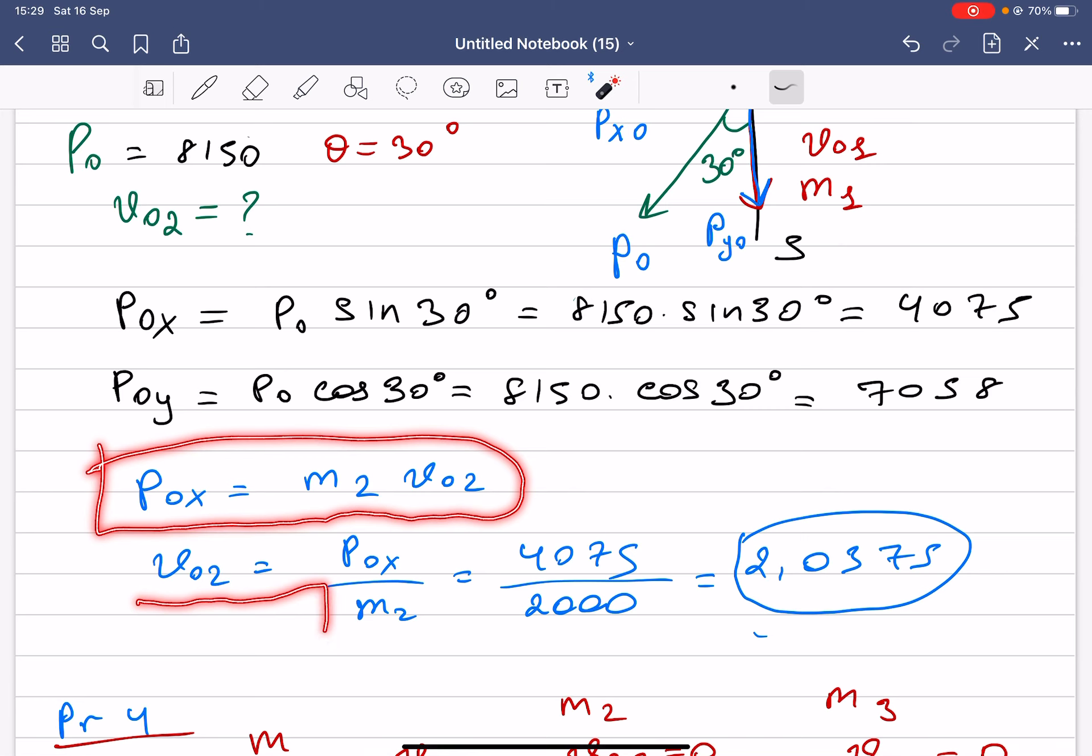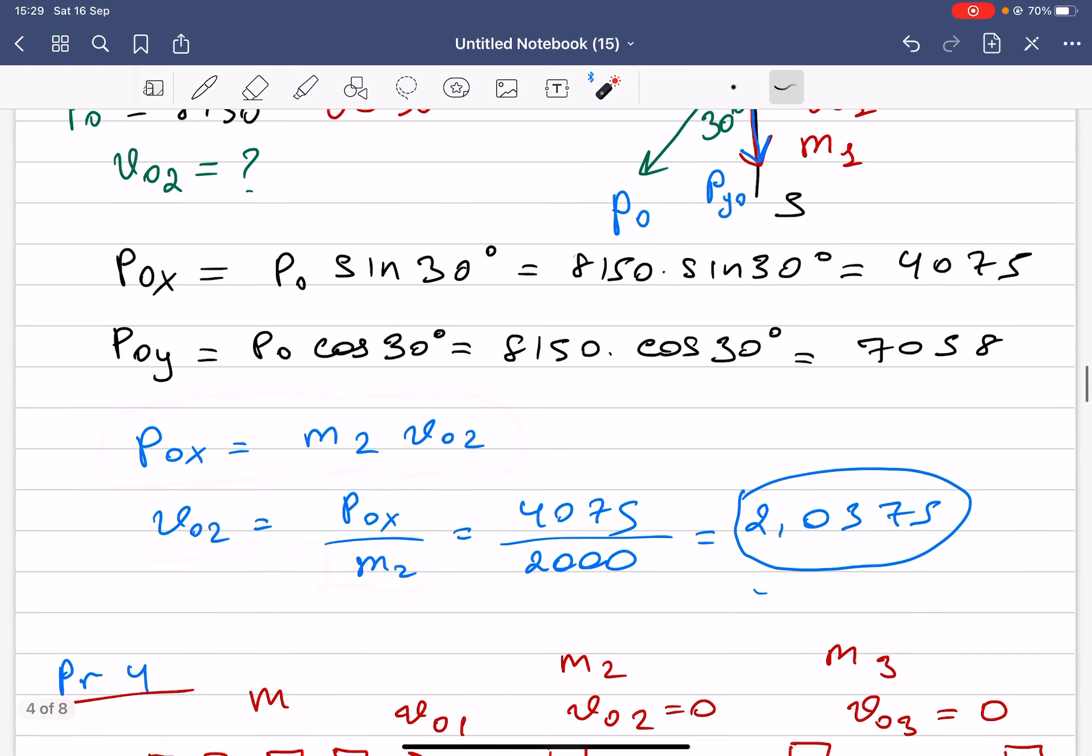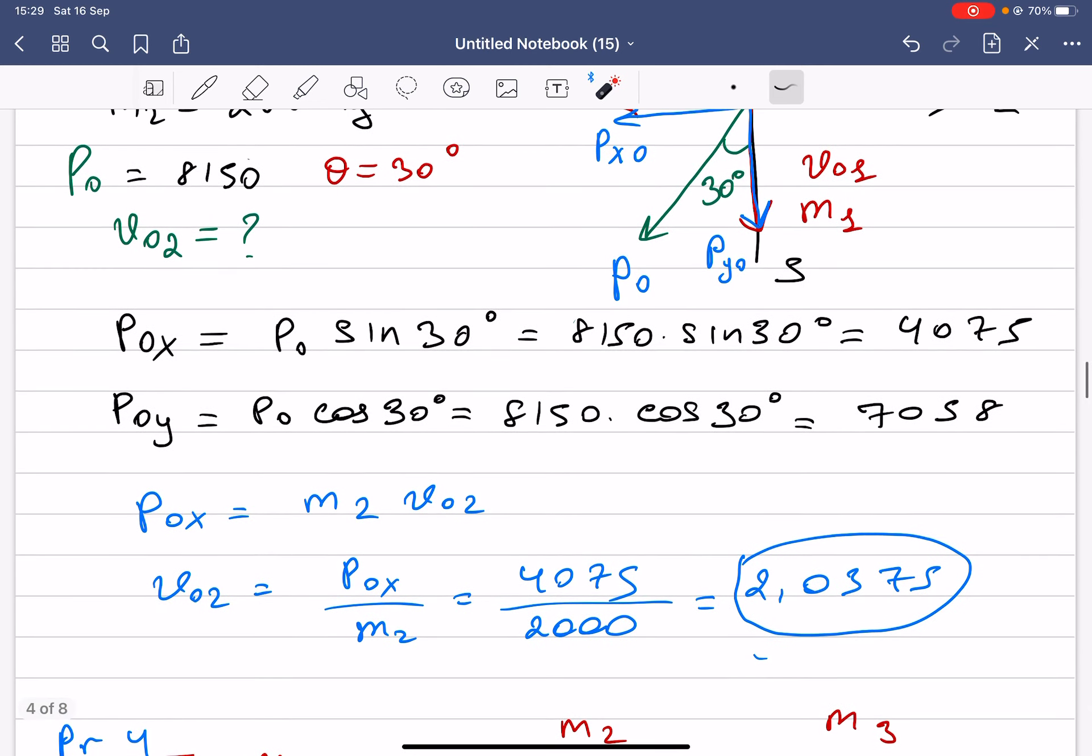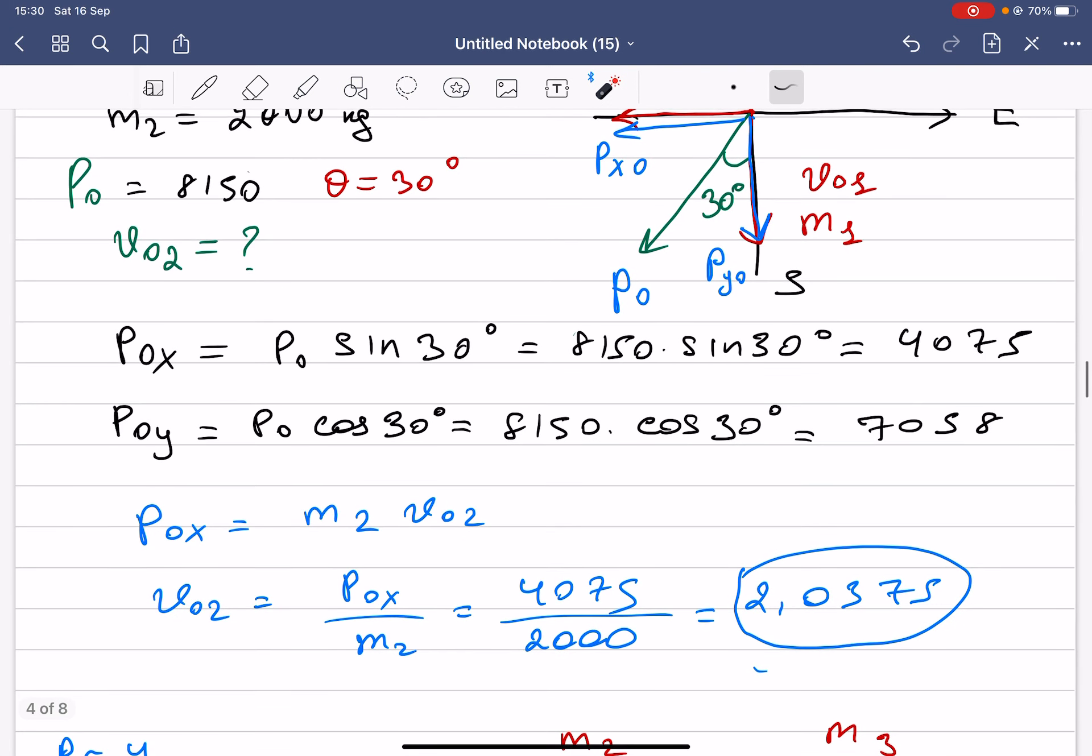Which is P_initial_x divided by mass 2. By plugging the numbers, we get v_initial_2. So this is your answer.